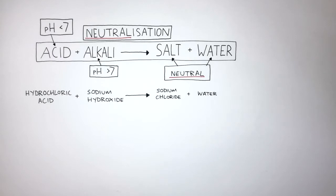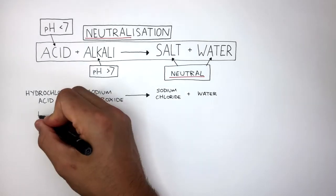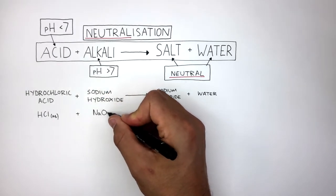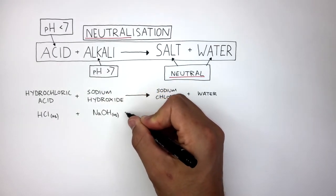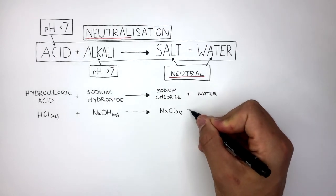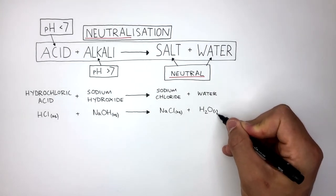Alkalies are always metal hydroxides. The balanced symbol equation is HCl (aq) plus NaOH (aq) reacts to form NaCl (aq) plus H2O (l).